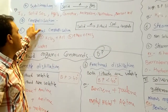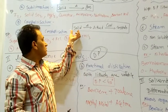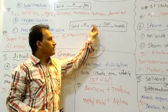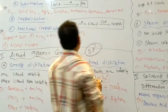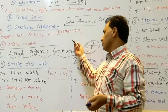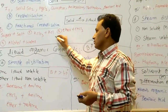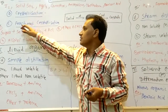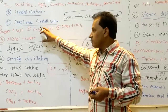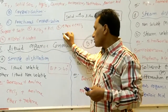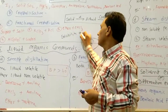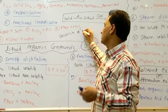Coming to the second method: crystallization. In crystallization, the solid is heated to form a liquid, then cooled again to form crystals. This process is based on different solubility. When crystallization is repeated multiple times, it is known as fractional crystallization, which is based on the difference in solubility of the substances.